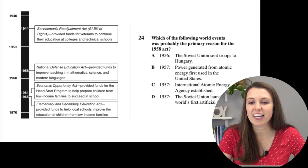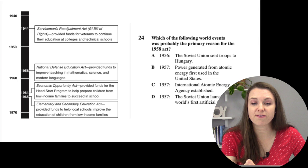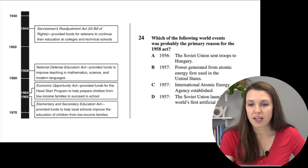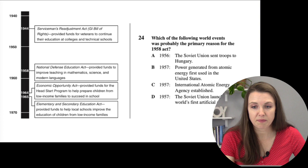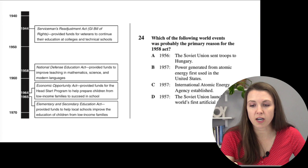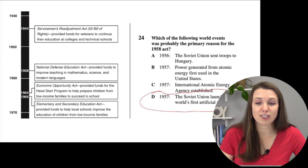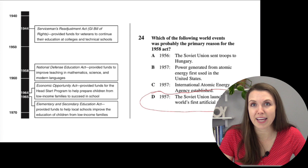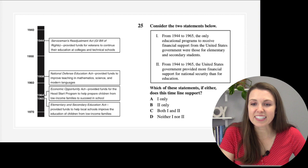Question twenty-four: which world event was probably the primary reason for the 1958 National Defense Education Act, which funded improvements in mathematics, science, and modern languages? Options: the Soviet Union sent troops to Hungary; atomic power first used in the U.S. in 1957; international atomic energy agency established; or the Soviet Union launched the world's first artificial satellite. The answer is D — the satellite launch alarmed the U.S., prompting them to educate kids in science and technology to stay competitive.